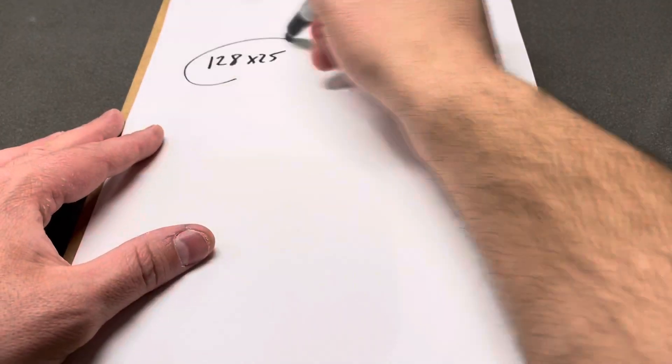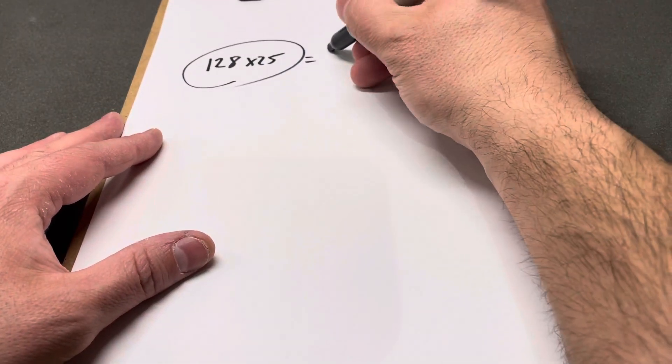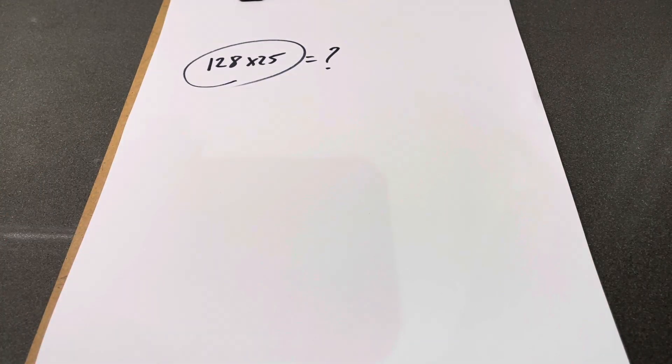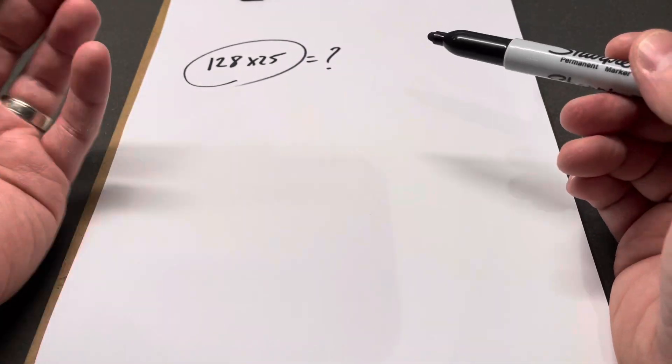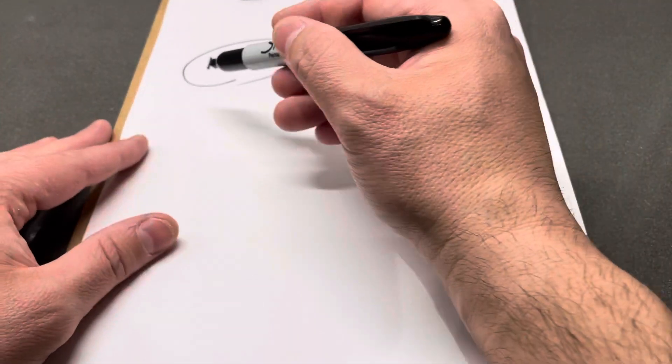So 128 times 25 is what we're looking for. In my head, this is what I would do: I always take the bigger number and leave it as is. I'll show you a way to break this down even further, but this is how I do it.